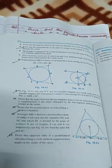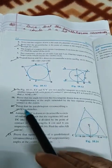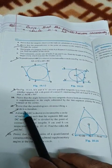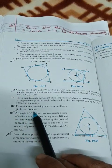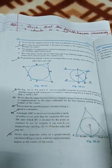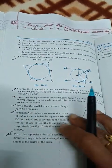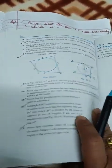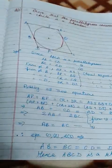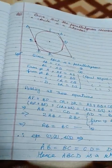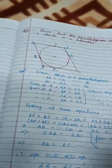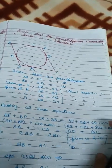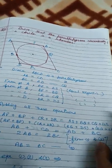अब हम करेंगे next question, that is 11th question: prove that the parallelogram circumscribing a circle is a rhombus। देखो यह बोल रहा है कि एक circle और उसके बाहर से आपने एक parallelogram बना दिया, और वो rhombus है। Rhombus क्या होता है — जिसकी चारों sides equal होती हैं उसको हम rhombus कहेंगे — यह हमने proof करना है।